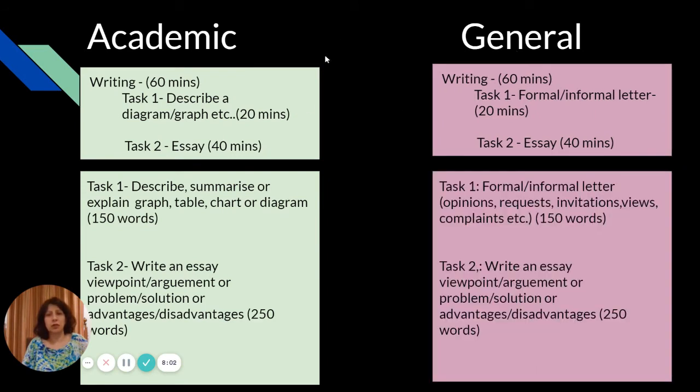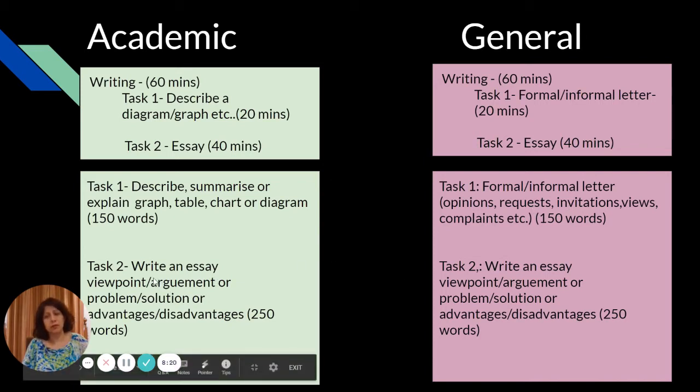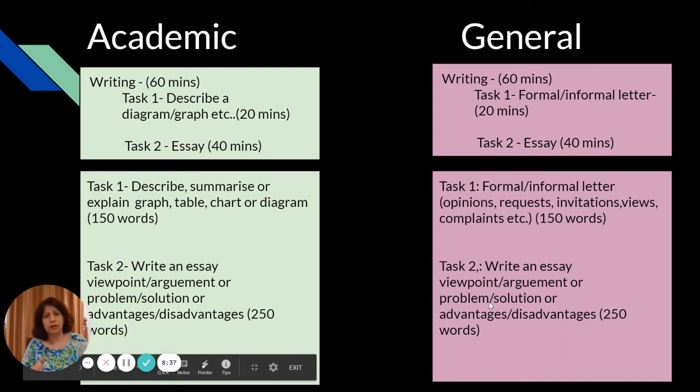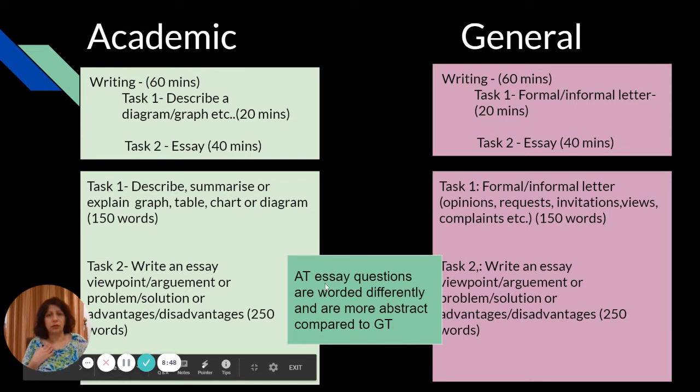In general again, the colors are different because it's slightly different. For academic, there are 60 minutes, same goes for general, except task one is more of describing, summarizing, or explaining a graph, chart, or diagram, whereas in general it's a formal or informal letter. Task two is the same - it's like an essay here, also an essay there. It's just the question wording is different. The questions asked in general are more on day-to-day topics compared to academic ones which are more abstract.